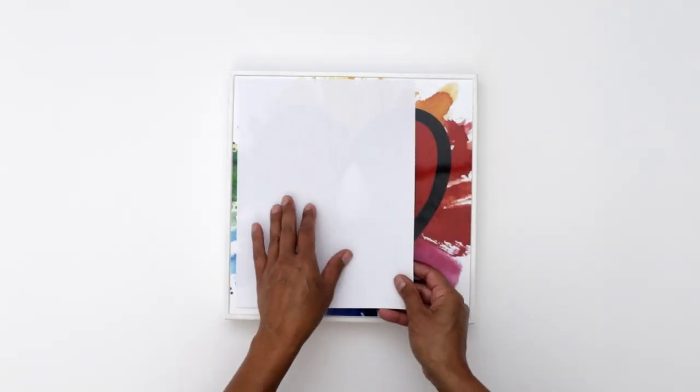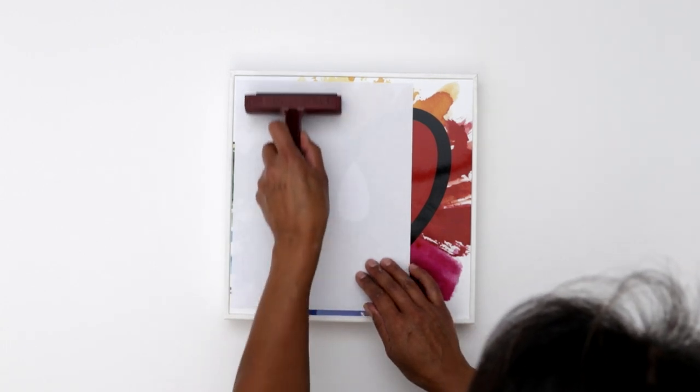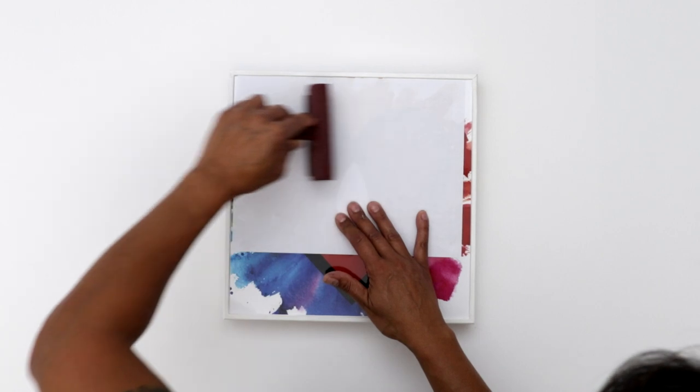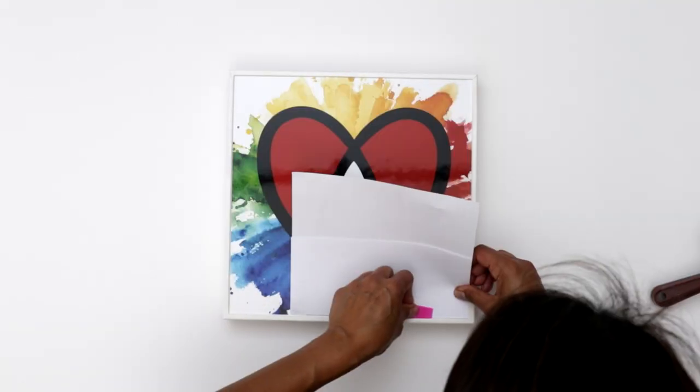Then you can take a clean piece of paper and a brayer and roll on top of your piece, making sure once again all those bubbles are out and that the piece is adhered securely. And then just allow enough time for that glue to dry thoroughly before you apply your art resin.